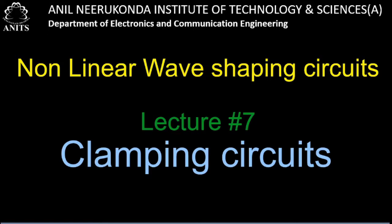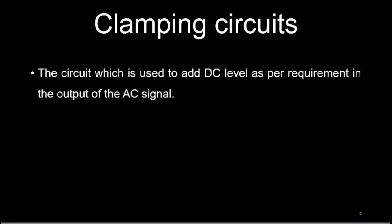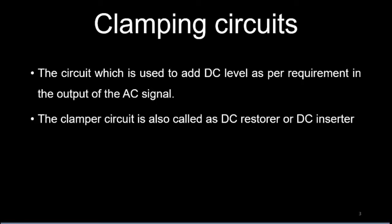Hello everyone. In today's class we are going to discuss about clamping circuits. Clamping circuits are the circuits which are being used to add a DC level as per requirement in the output of the AC signal. So whenever we want to add some DC quantity to the AC input signal then we will be using clamping circuits. This clamper circuit is sometimes called as DC restorer or DC inserter.